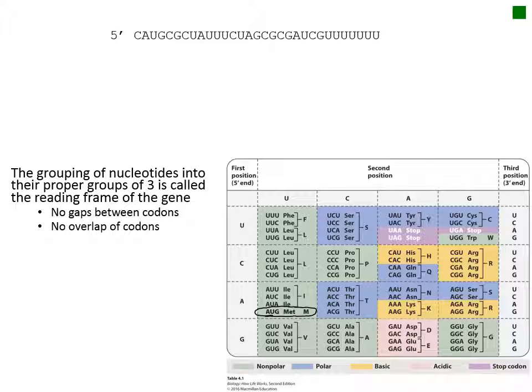Looking at the RNA strand, we will start at the five prime end and scan along until we find the sequence AUG. This is the start codon. This will mark our translation start site and set the correct reading frame for the gene.